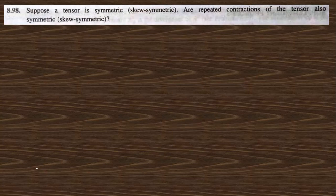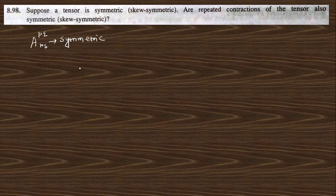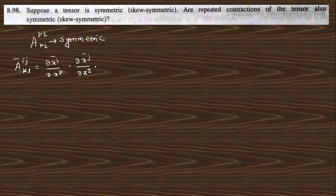Go to the next question. Suppose a tensor is symmetric. The repeated contraction of the tensor — if we do a repeated contraction, it will also be symmetric. This obviously follows the transformation: del x^i bar by del x^p, del x^r by del x^p, del x^j bar by del x^q, del x^r by del x^k, del x^r by del x^s, del x^r by del x^l into A_pqrs.